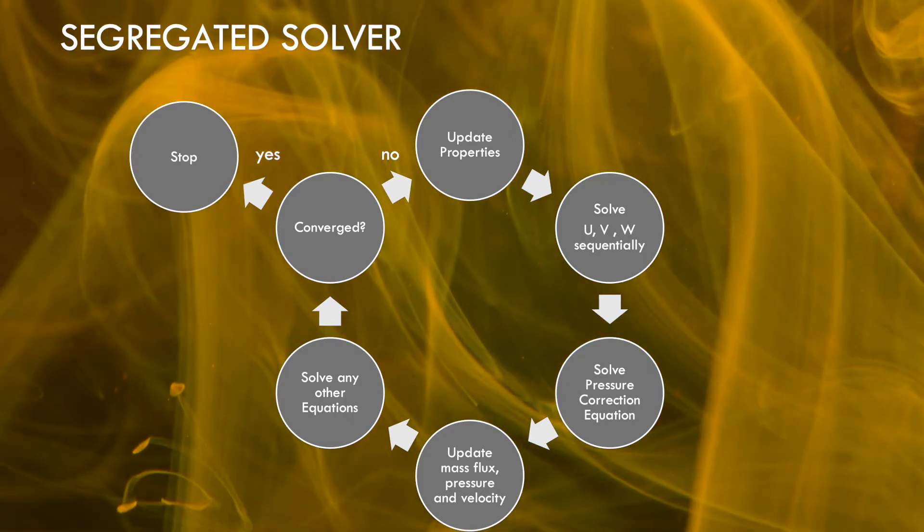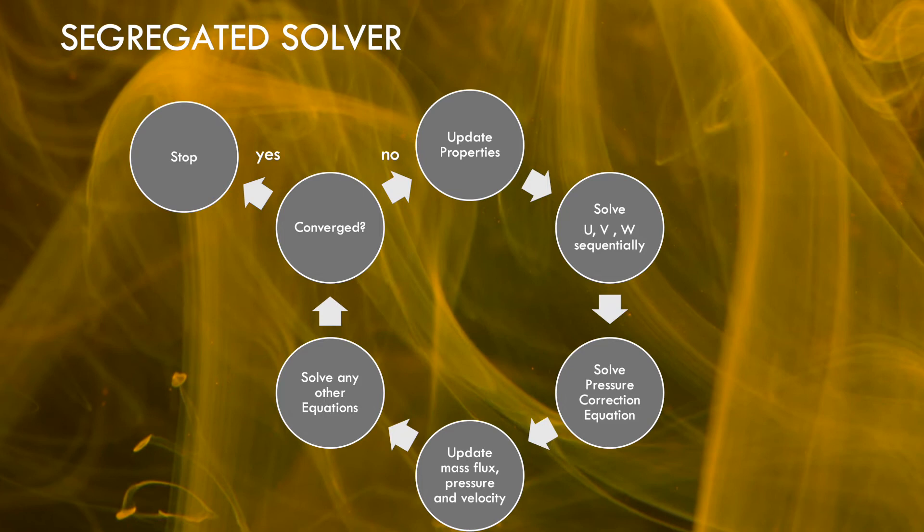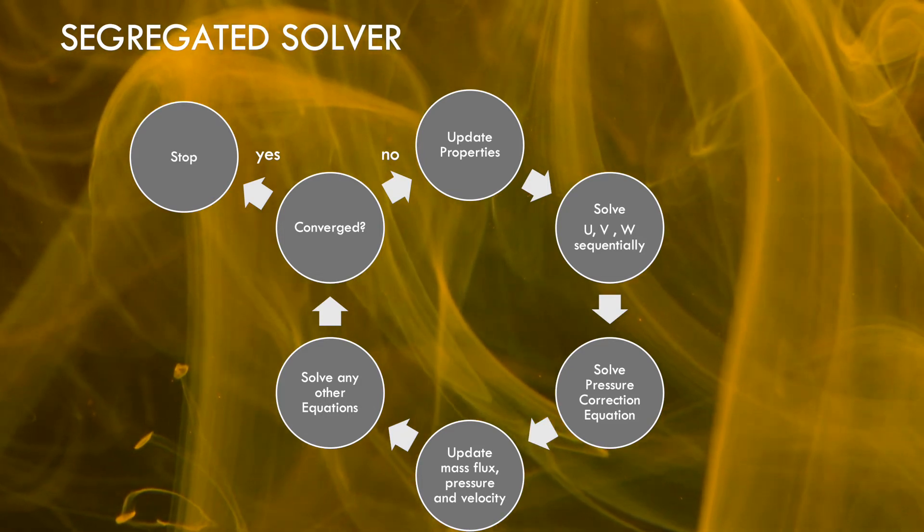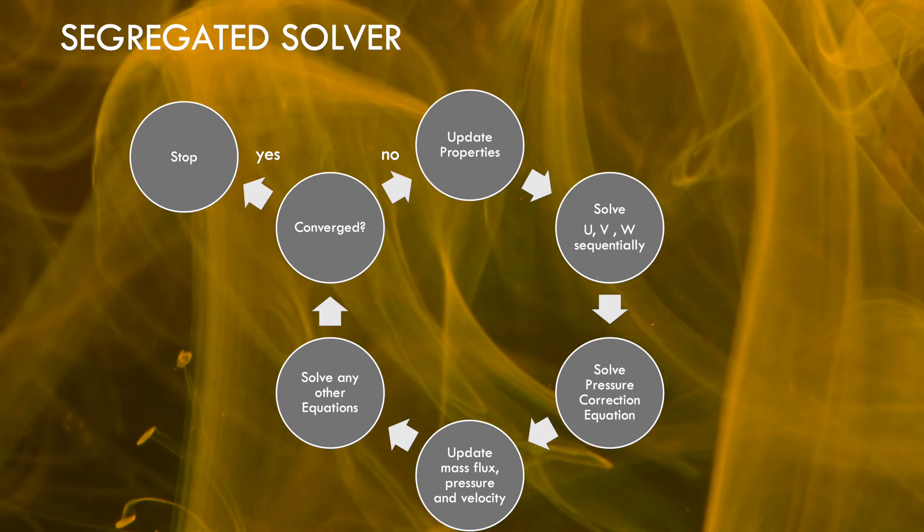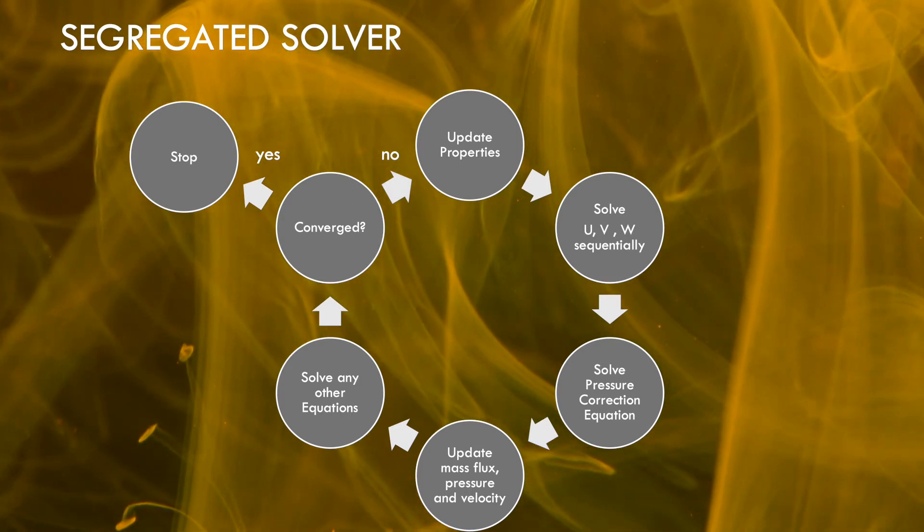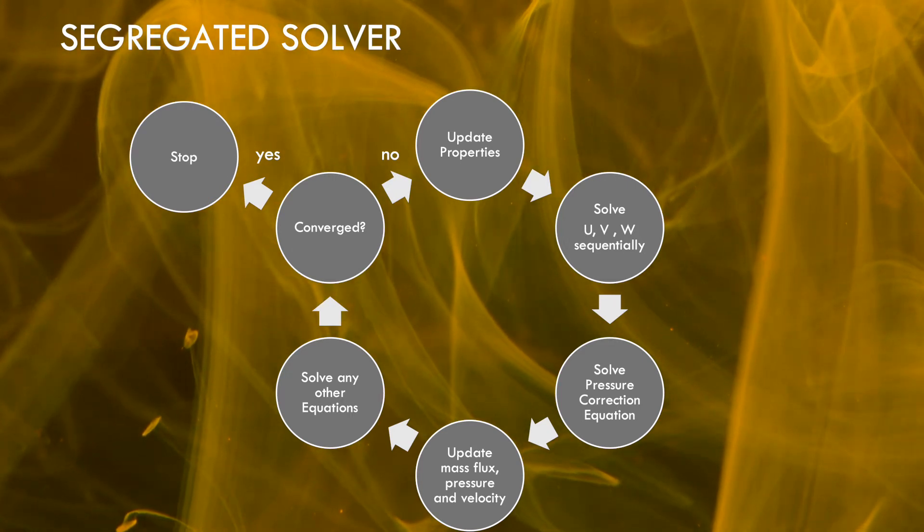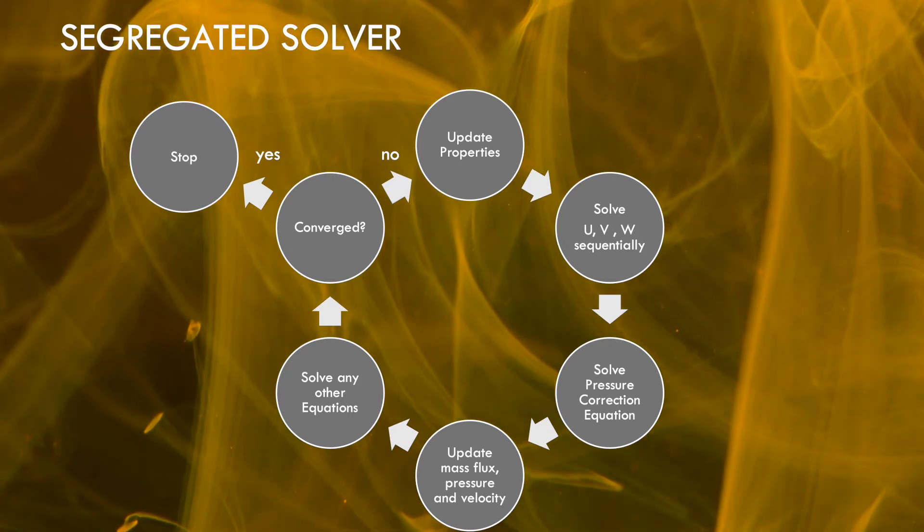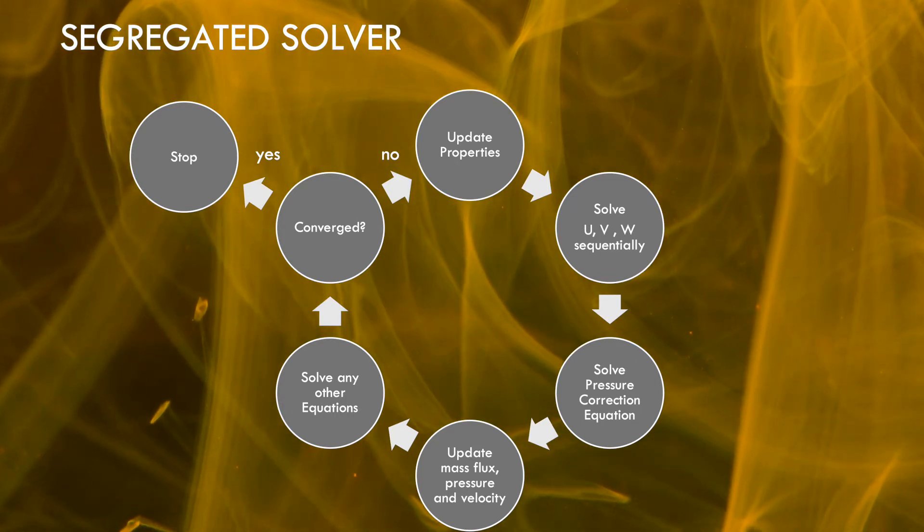Solve the pressure correction equation using the obtained velocity field and the mass flux. Correct face mass fluxes, pressure, and the velocity field with the new values. Solve any equations for additional quantities, then check for convergence. This process is repeated until the set convergence criteria is met. Each governing equation while being solved is decoupled or segregated from other equations, thus it is named the segregated algorithm.